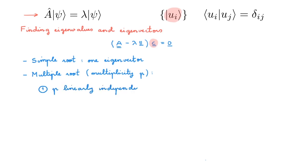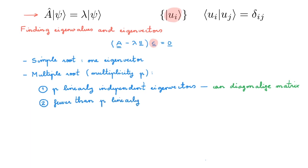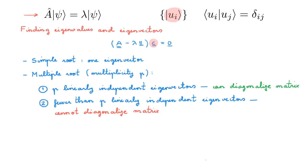If the p eigenvectors are all linearly independent for all roots, then we will have a total of n linearly independent eigenvectors in our n-dimensional state space and we will be able to diagonalize the matrix. However, if some of those p eigenvectors are repeated, we will not have enough linearly independent states and we will not be able to diagonalize the matrix. For our purposes, having such repeated eigenvectors could be a real problem. However, in quantum mechanics we're mostly interested in Hermitian operators and unitary operators, and luckily for us, in Hermitian and unitary operators we never encounter this situation — we can always find n linearly independent eigenvectors that allow us to diagonalize the operator.